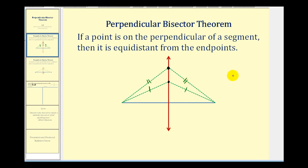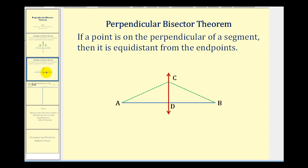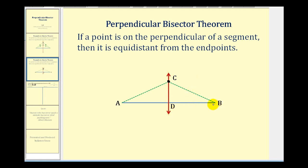Before we write our two-column proof, let's talk about our strategy. If we consider point C, we want to prove that the length of AC is equal to the length of BC, or that segment AC is congruent to segment BC, given that this red line is the perpendicular bisector of the blue segment.